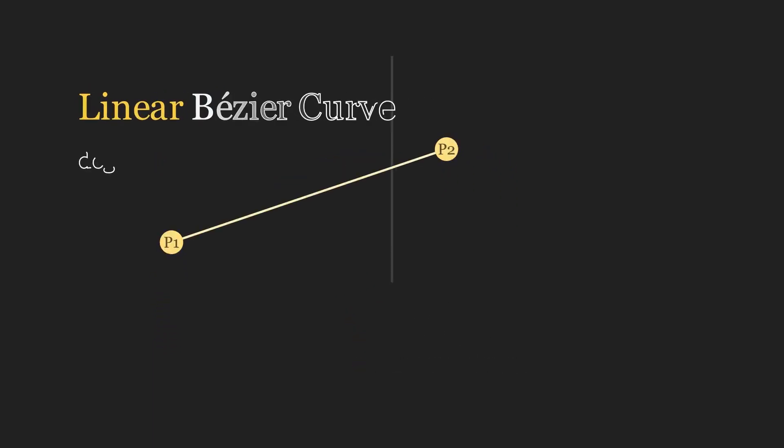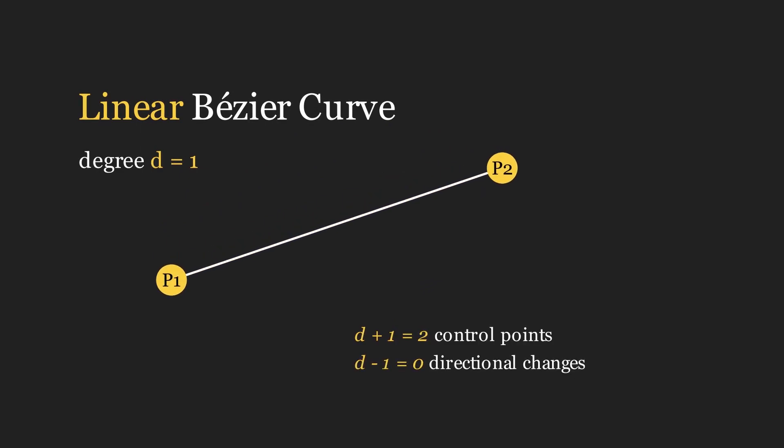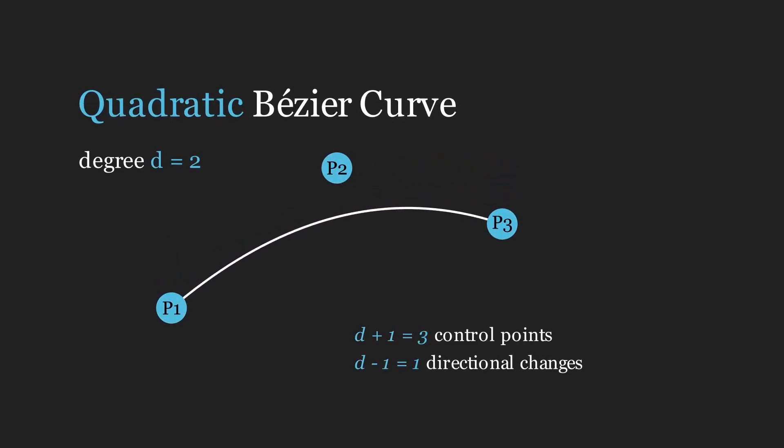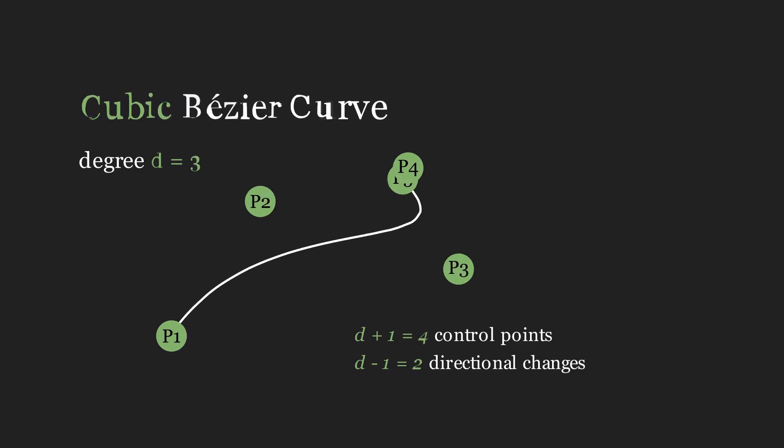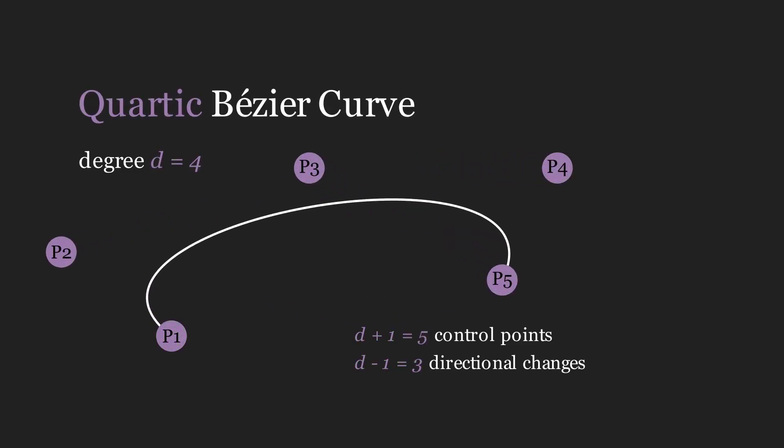If you want to generalize, a d-degree Bezier curve is defined by d plus one control points, and can have a maximum of d minus one directional changes.